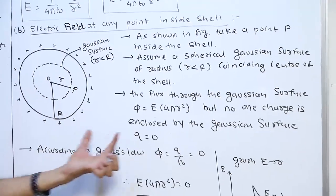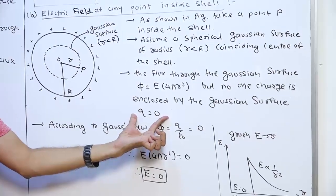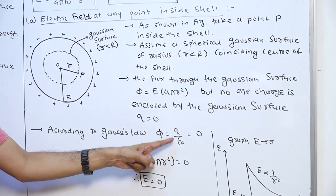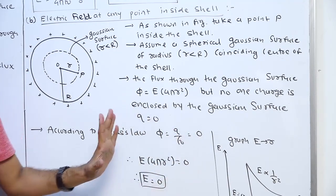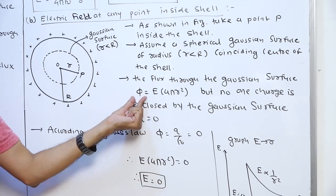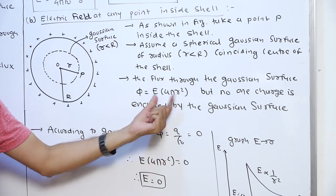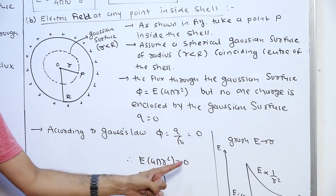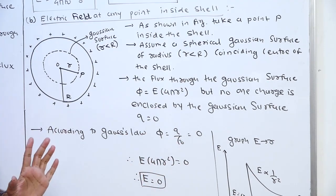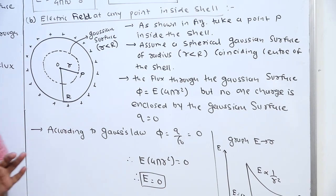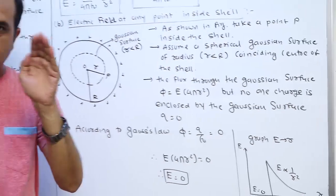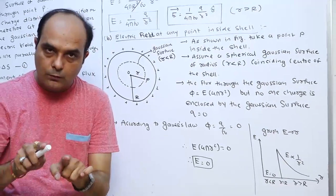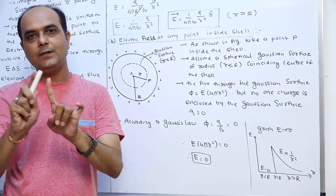However, there is no charge enclosed by this Gaussian surface inside the shell. Therefore, charge q equals zero. According to Gauss's Law, phi equals q by epsilon-zero; since q equals zero, phi equals zero. Comparing with phi equals E into 4 pi r squared, we get E into 4 pi r squared equals zero, therefore E equals zero. So inside the charged spherical shell, the electric field is zero, but outside the shell, the electric field is not zero and equals (1/4πε₀)(Q/r²).